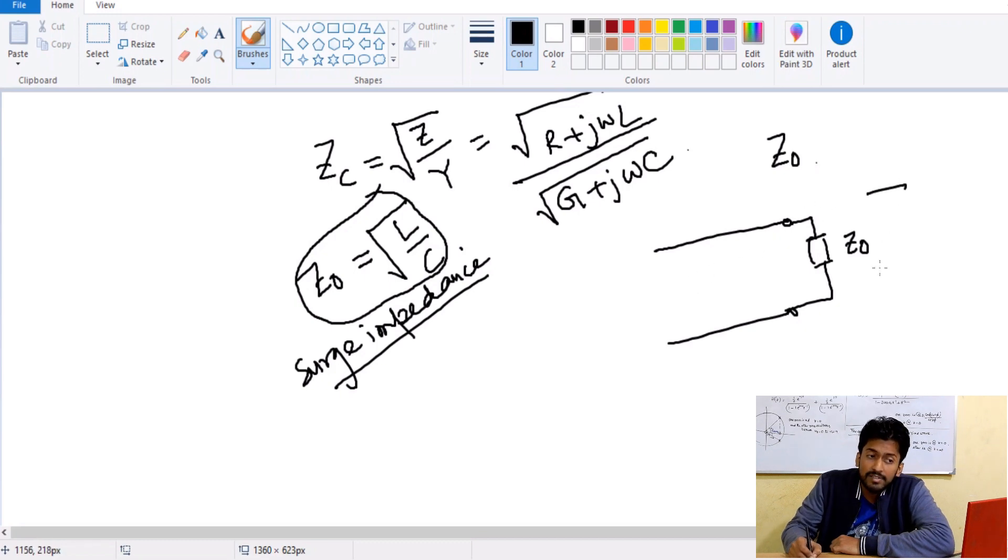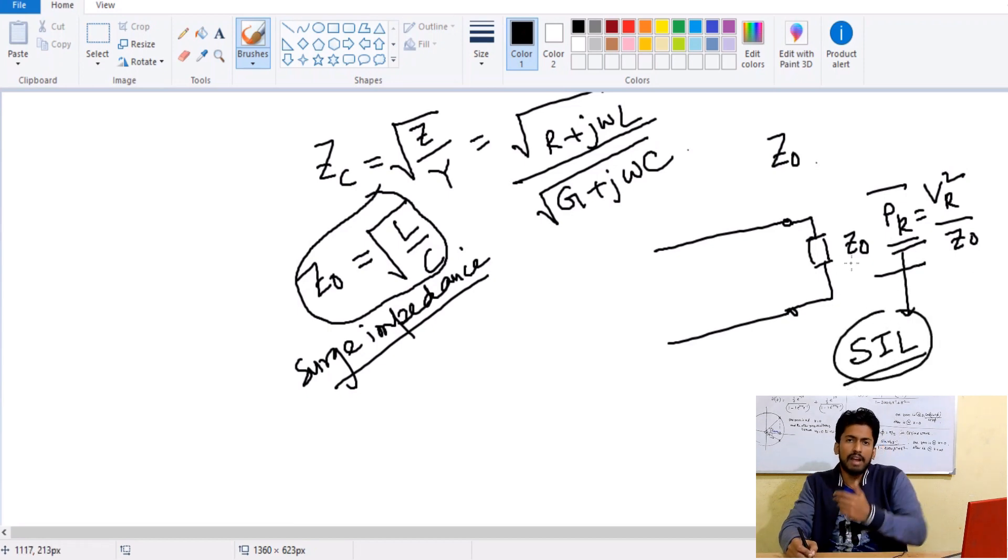Then the total power at the receiving end can be easily related to this: P_R equals V_R squared by Z naught, means receiving end voltage squared divided by Z naught. This power loading is known to be as surge impedance loading.